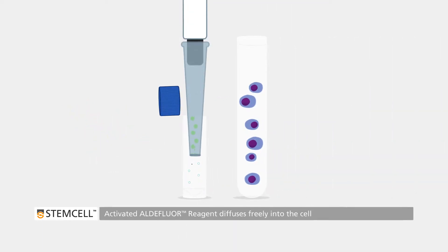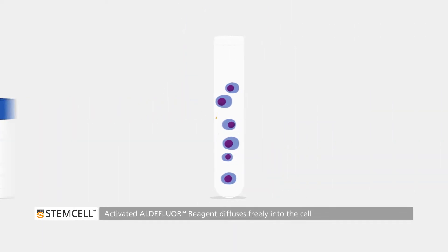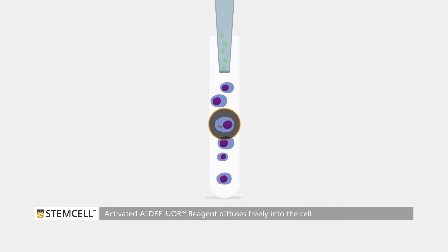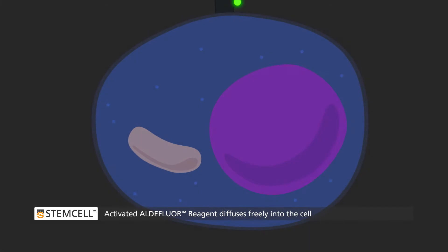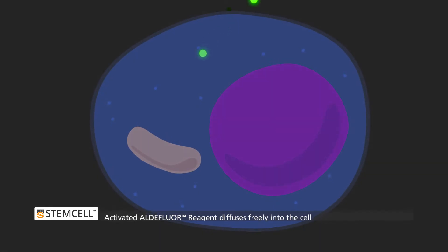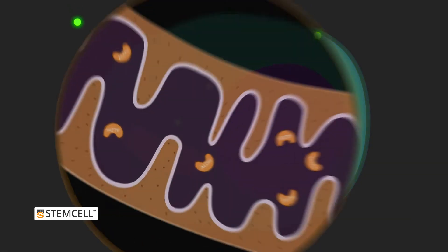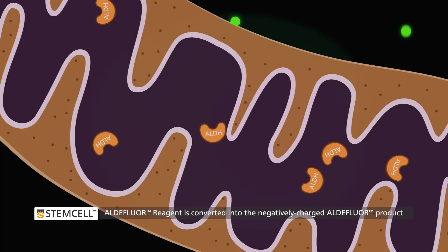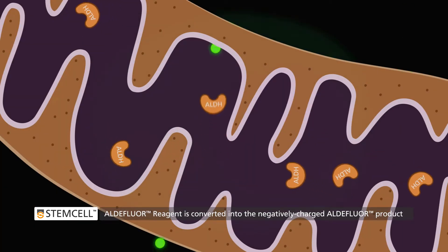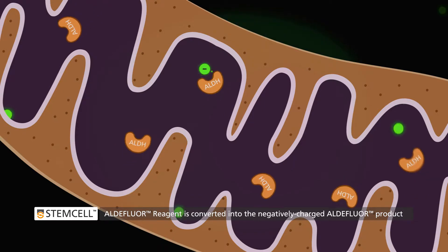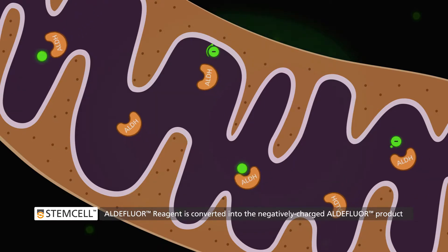The activated Aldiflor reagent substrate diffuses freely into the cell, where the ALDH enzyme catalyzes it to form the negatively charged Aldiflor product.